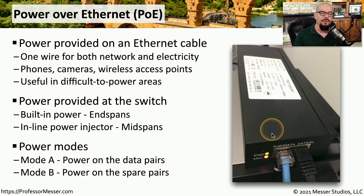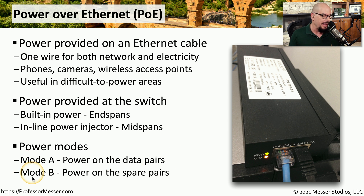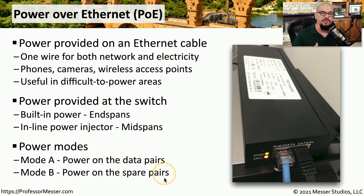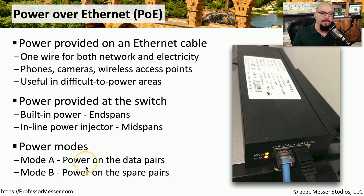If your Ethernet network is a 10 or 100 megabit per second connection, there are extra wires inside that cable that can be used for power. We refer to that as Mode B Power over Ethernet, where power is sent on the spare pairs. If you're using gigabit connections, all wires are used for Gigabit Ethernet data, and in those cases we use Mode A, where power and data are sent over the same wire.